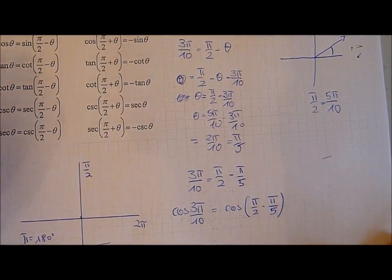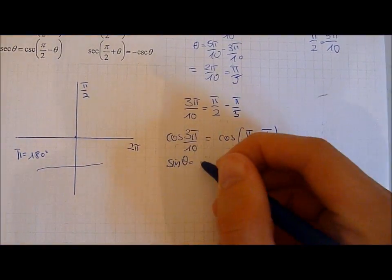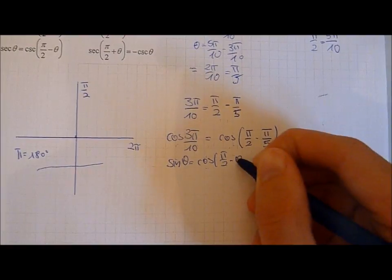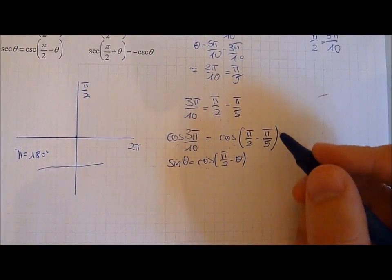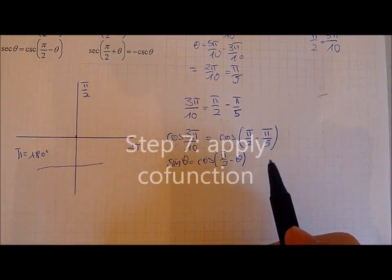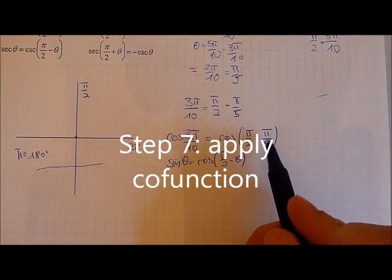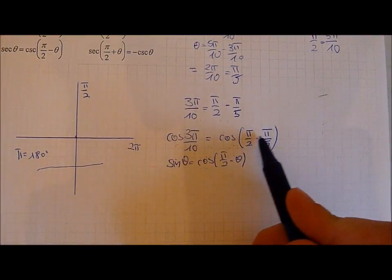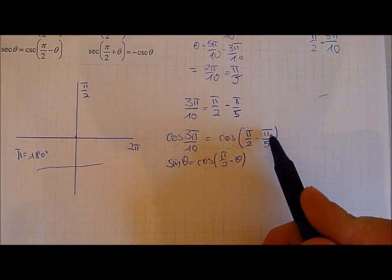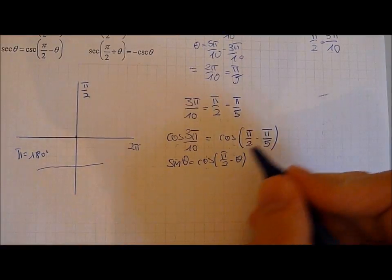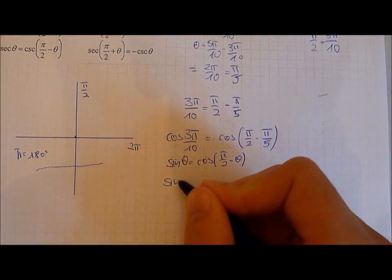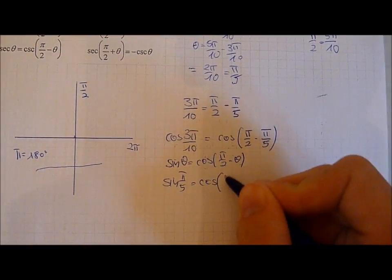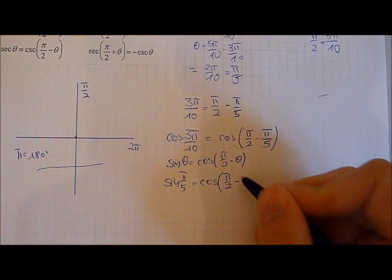So our cofunction identity is sine theta equals cos pi over 2 minus theta. Now you can see that we have pi over 5 that we can sub into both of those. This is the same as this one when we sub into pi over 5. So that's what we are going to do. So sine of pi over 5 equals cos pi over 2 minus pi over 5.